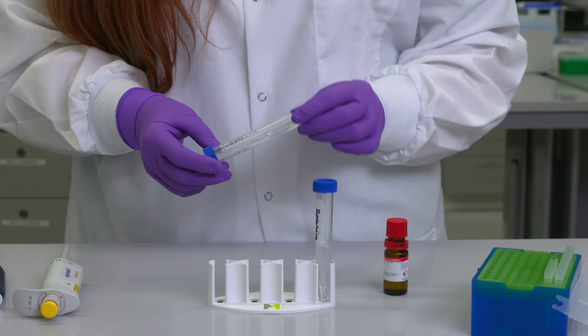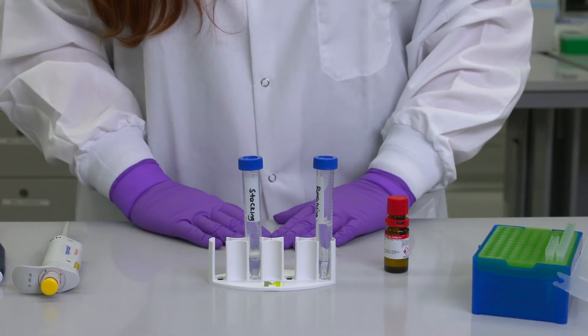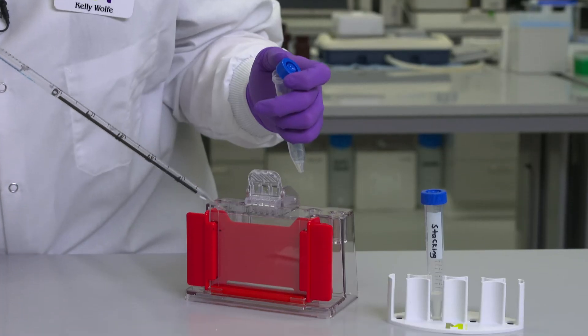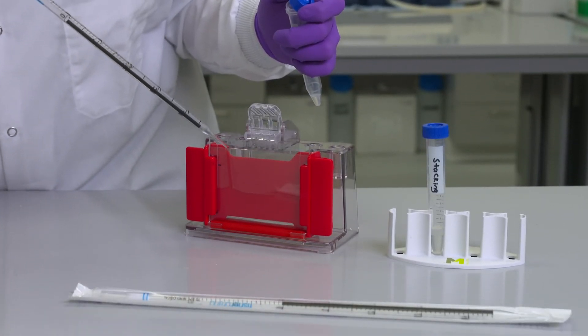Once APS and TEMED are added the gels will begin to polymerize, so gels should be poured quickly after this step. Now I will fill the cassette with resolving gel to the marked height.